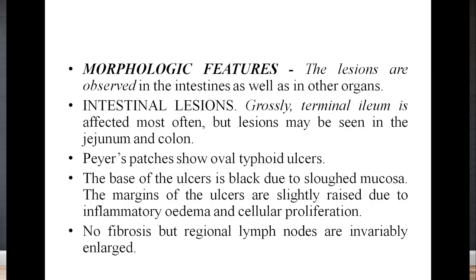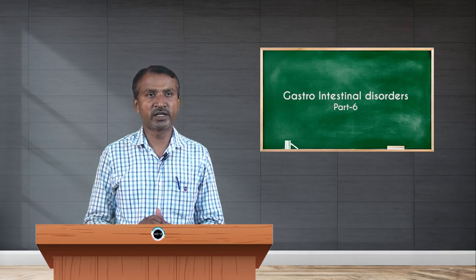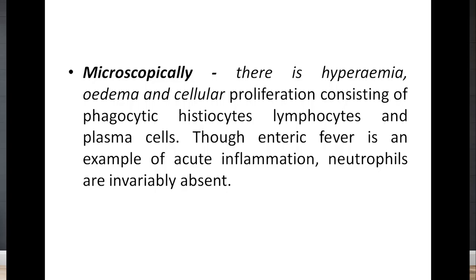Intestinal lesions: grossly, the terminal ileum is affected most often, but lesions may also be seen in the jejunum and colon. Peyer's patches show oval typhoid ulcers. The base of the ulcers is black due to sloughed mucosa. The margins of the ulcers are slightly raised due to inflammatory edema and cellular proliferation. There is no fibrosis, but regional lymph nodes are invariably enlarged. Microscopically, there is hyperemia, edema, and cellular proliferation consisting of phagocytic histiocytes, lymphocytes, and plasma cells. Although enteric fever is an example of acute inflammation, neutrophils are invariably absent.